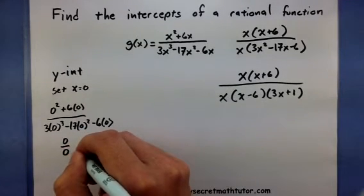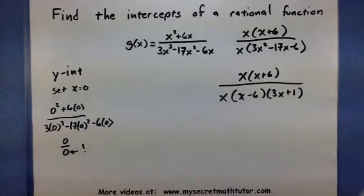Now we can't divide by 0. That's a problem. Which means there is no y intercept. It doesn't cross it.